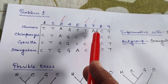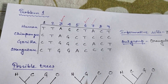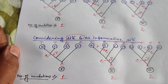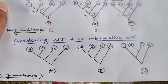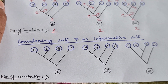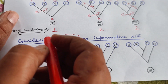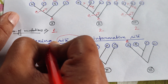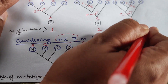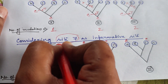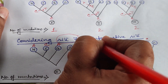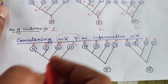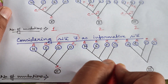For site 7: human has A, gorilla has A, chimpanzee has C, and orangutan has C. Write A wherever human appears, C wherever chimpanzee appears, A wherever gorilla appears, and C wherever orangutan appears across all three trees. Since orangutan is the outgroup, the root base is C.